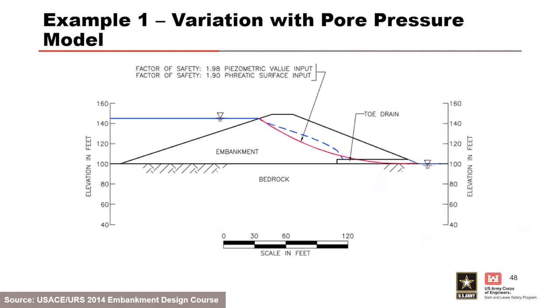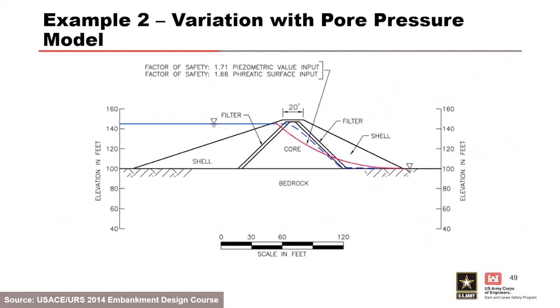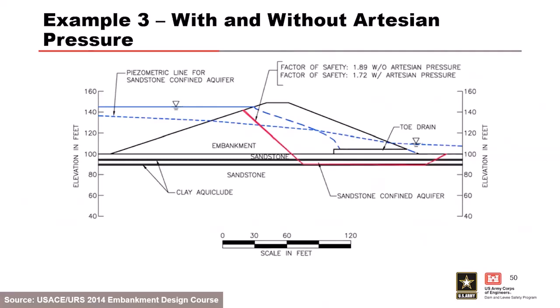Comparing a section with and without artesian conditions: if artesian pressures are not accurately modeled, it can significantly affect factors of safety. Analyzing without versus with the artesian pressures near the toe shows quite a difference—from 1.7 to 1.9. Accurately modeling your pore pressure regime is more important than which method you use to input pore pressures into the model.